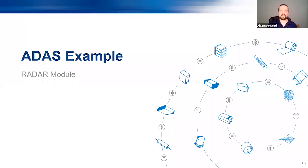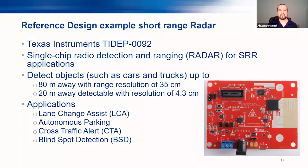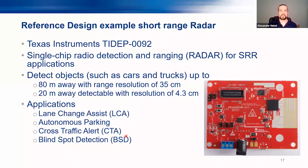Moving to the next example — a radar module, also very small size. With this radar module you can detect objects up to 80 meters away, making it useful for distance control, rear view systems, lane change assist, autonomous parking, or cross traffic alert — very standard requirements.